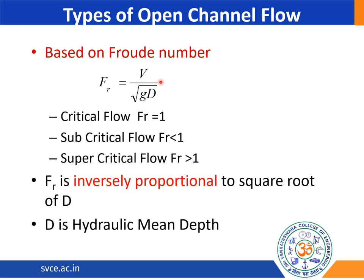Using this formula, we can calculate the Froude number value and based on comparing values with the Froude number, we can classify the type of flow: critical flow when the Froude number is equal to 1, subcritical flow when the Froude number is less than 1, and supercritical flow when the Froude number is greater than 1. So these are the types of open channel flow occurring in the channel.